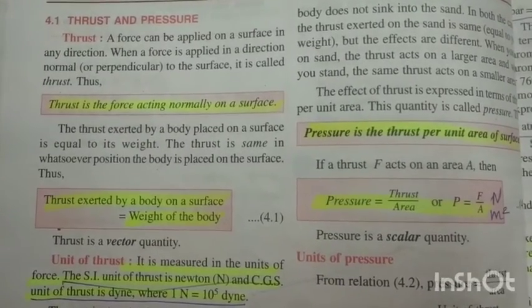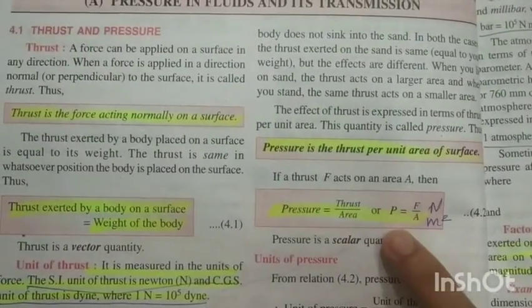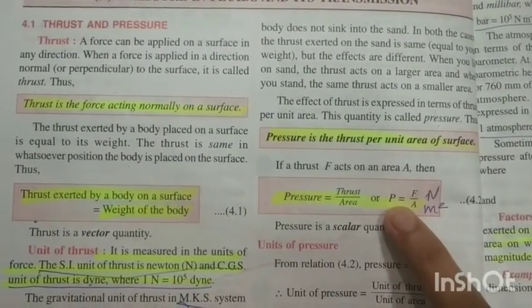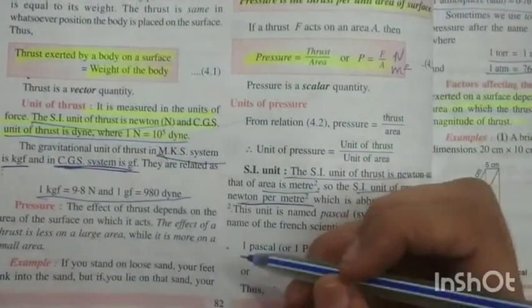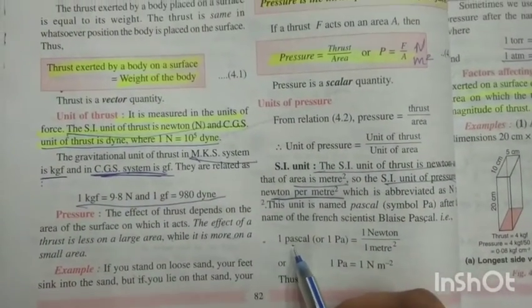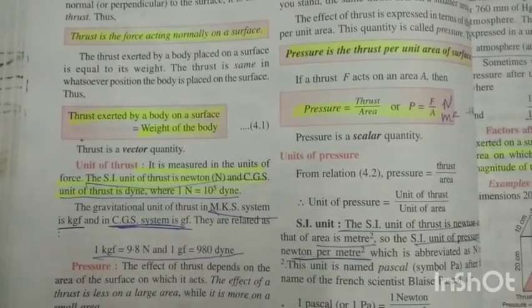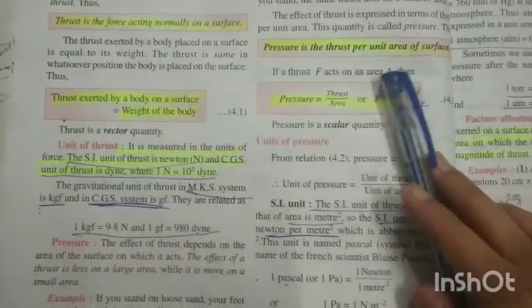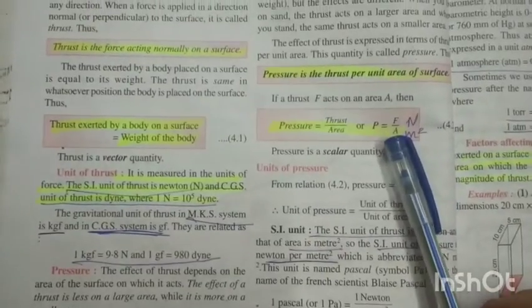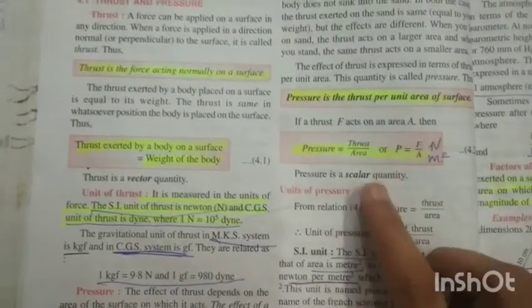Next is pressure. When we exert force — for example, pressing a pen — it produces pressure. So pressure is thrust per unit area of surface. The formula is thrust upon area, or you could say force upon area, which you will have read in previous classes.